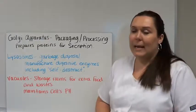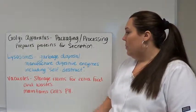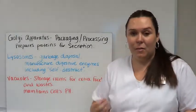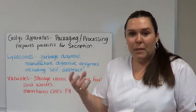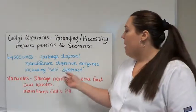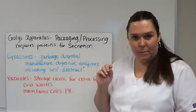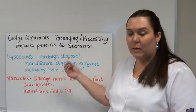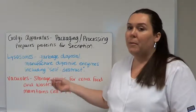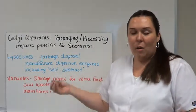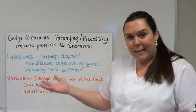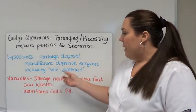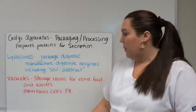The next organelle is lysosomes. Lysosomes are your garbage disposal. They manufacture digestive enzymes, including the self-destruct. The digestive enzymes break down the food in the cell. When the cell is near death or at death, it releases an enzyme that causes the cell membrane to dissolve. When the cell membrane dissolves, all the contents fill out the cell. The self-destruct is your lysosome. That's important to remember.